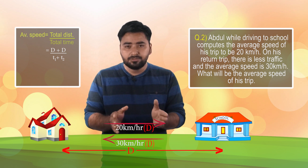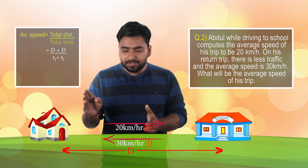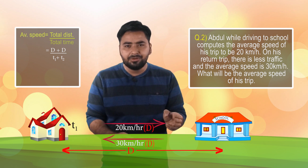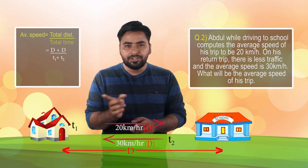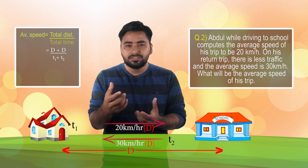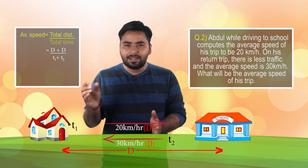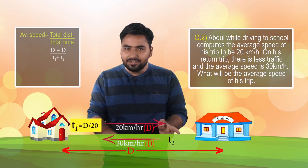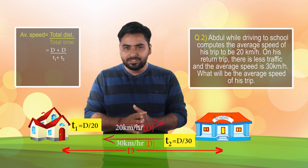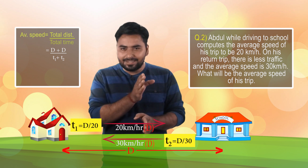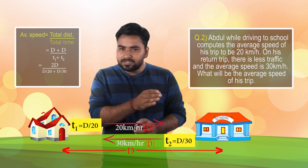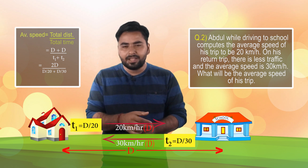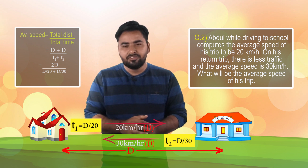Let t1 and t2 be unknown times. Since time equals distance divided by speed, t1 for the trip to school equals d divided by 20, and t2 for the return equals d divided by 30. Average speed equals total distance (d + d) divided by total time (d/20 + d/30). Cross-multiplying gives 50d divided by 600, so solving gives 600 divided by 50, which is 24 km per hour.